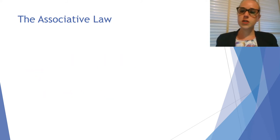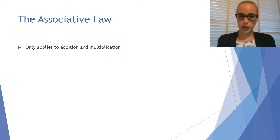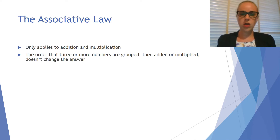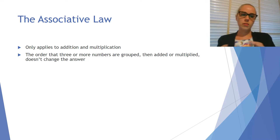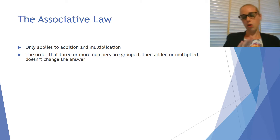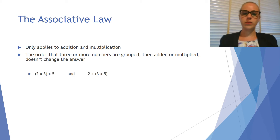The associative law is similar and again it only applies to addition and multiplication. The associative law says that the order that three or more numbers are grouped and then added or multiplied — depending on what you're asked to do — doesn't change the answer.